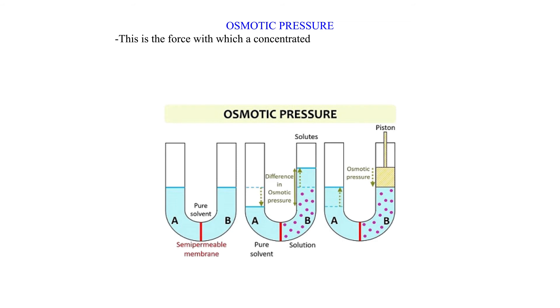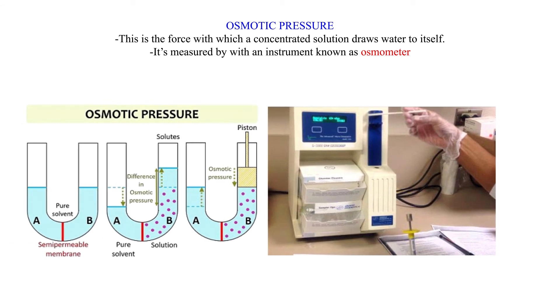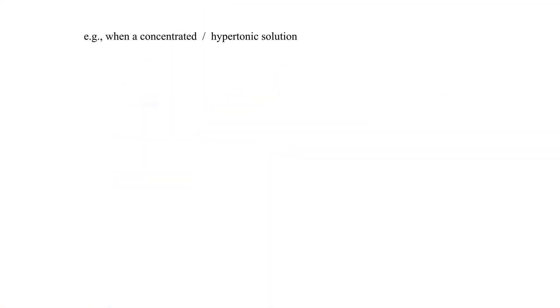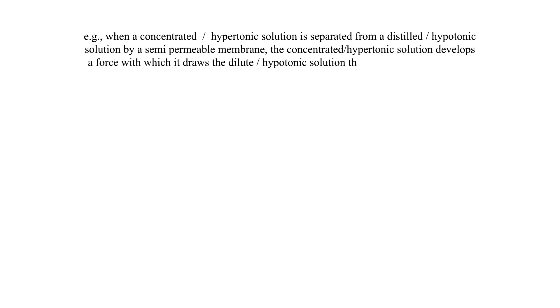Osmotic pressure: This is the force with which a concentrated solution draws water to itself. It is measured with an instrument known as an osmometer. For example, when a concentrated or hypertonic solution is separated from a distilled or hypotonic solution by a semi-permeable membrane, the concentrated solution develops a force with which it draws the dilute or hypotonic solution through the semi-permeable membrane to itself.